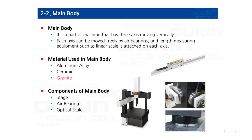First, the main body. We selected granite as the main body material because it has an excellent thermal expansion coefficient. Each axis is operated by air bearings and motors, and optical scales are attached on each axis as well.